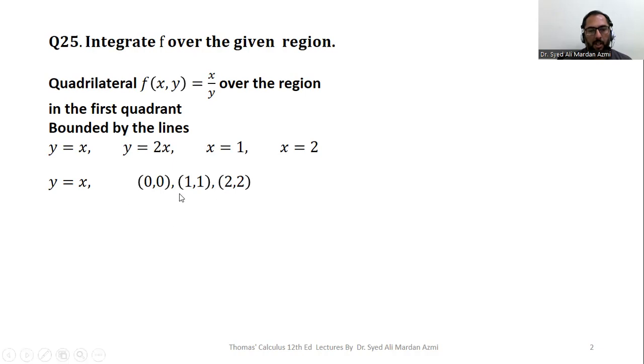Similarly, we can get ordered pairs for the other line y is equal to 2x. If you put x equal to 0, you will get y equal to 0. If you put x equal to 1, you will get y equal to 2. If you put x equal to 2, you will get y equal to 4 in this line.